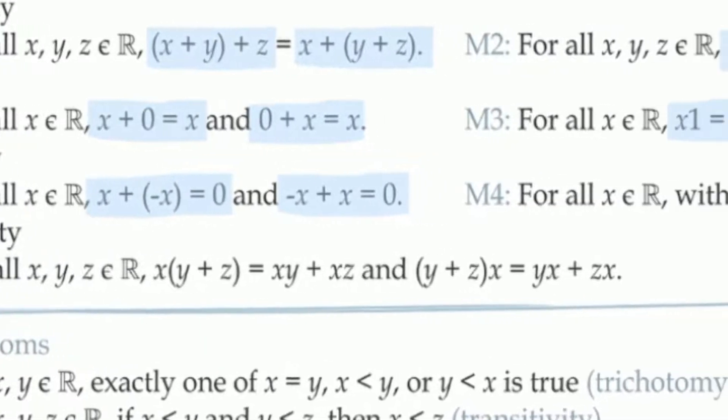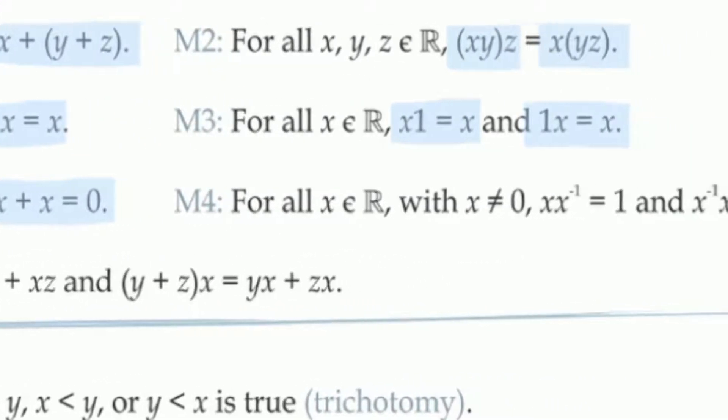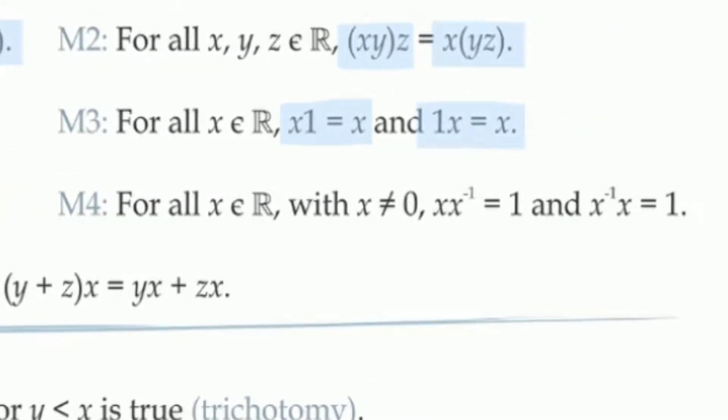Similarly, axiom M4 tells us that the inversion operation gives us the multiplicative inverse of a number. In other words, for any non-zero number x, if we multiply x and its inverse, it returns the multiplicative identity, 1.